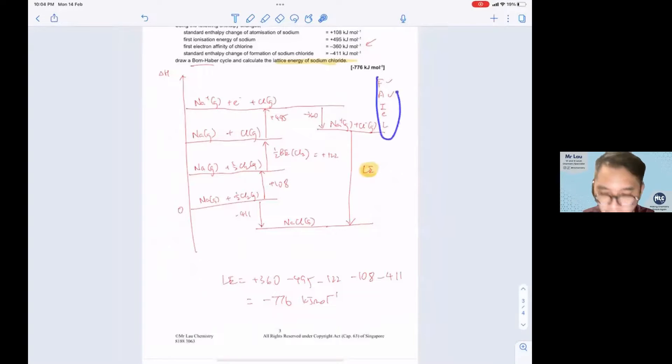So this is how you do a Born-Haber cycle, not troublesome at all, it's very easy. Just use this acronym to solve, but please take note that not all energy level diagrams are Born-Haber cycles. Born-Haber cycles is just a subset of the energy level diagrams. Once again this is one minute of energy level chemistry, see you next time.